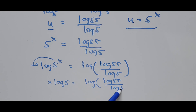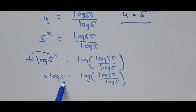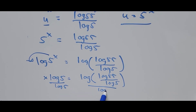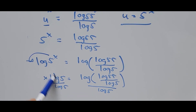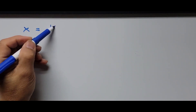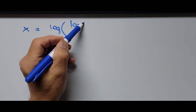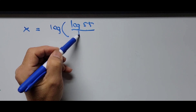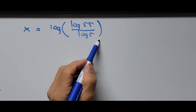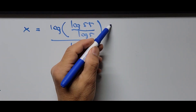Dividing both sides by log 5, we get the final answer: x equals log of (log 55 divided by log 5), all over log 5. This is our final answer for Method 1.